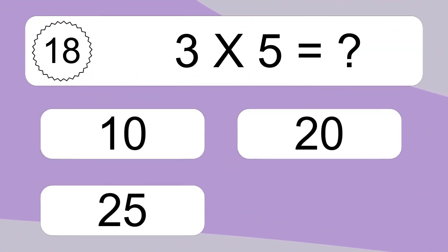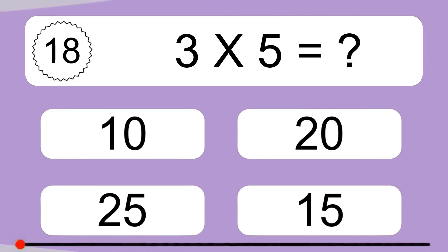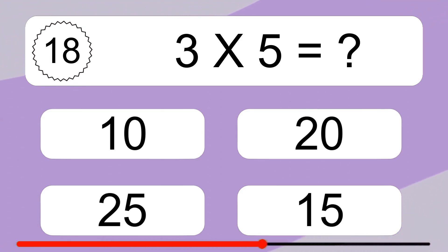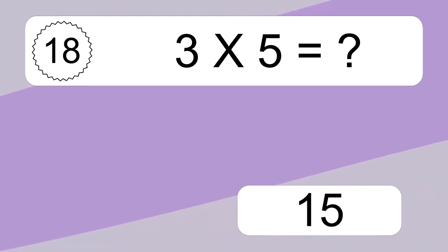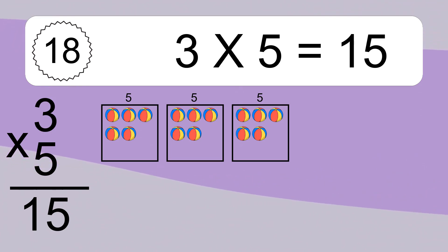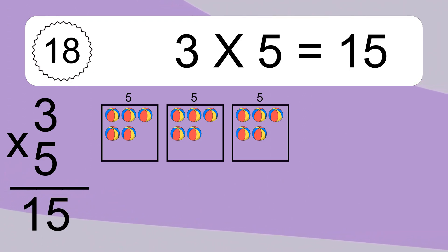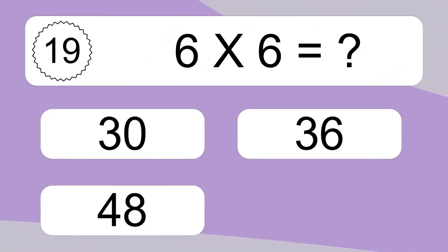3 times 5 equals what? 3 times 5 equals 15. We have 3 boxes, and each box has 5 colorful balls inside. If you count all the balls in all the boxes together, you will have 3 times 5 balls. This equals 15 balls.